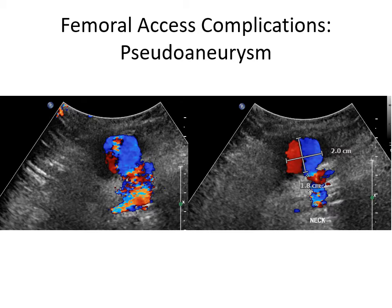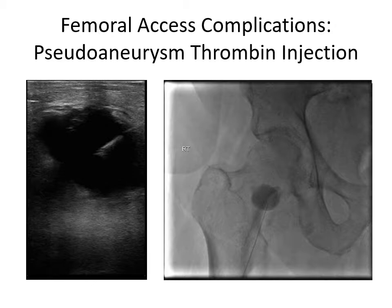Ultimately, the patient had a residual pulsatile mass with bruit that on ultrasound was found to be a large groin pseudoaneurysm. The aneurysm has a 1.8 cm neck and the patent part of the aneurysm is about 2 cm in size, but the actual aneurysm including the thrombosed part is almost 5 cm in diameter. The patient underwent ultrasound-guided thrombin injection. You can see the access needle being placed into the pseudoaneurysm on the left, and on the right an angiogram of the pseudoaneurysm itself. 300 units of thrombin was injected into the pseudoaneurysm.